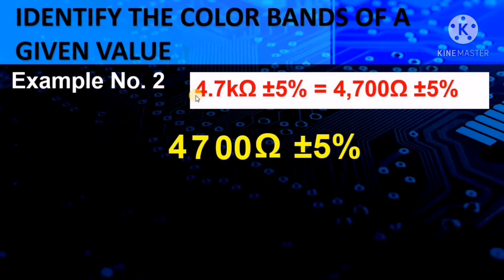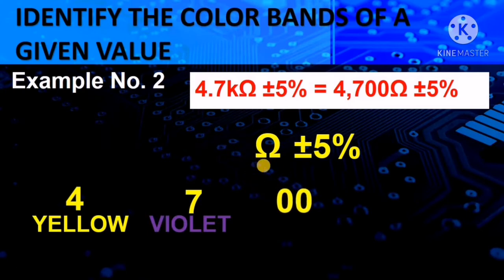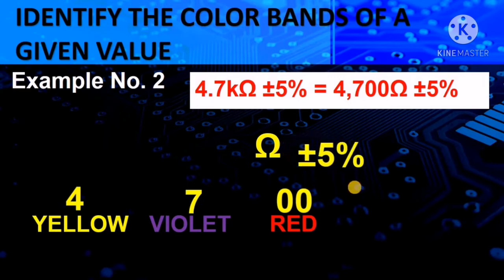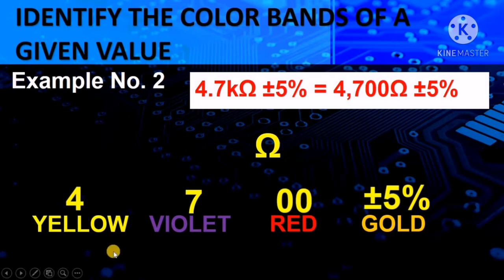Another example: what if the value you need to look for is 4.7 kilo ohms plus or minus 5%? We expand that to 4,700 ohms plus or minus 5%. The first two digits are 47: 4 for yellow, 7 for violet. There are two zeros, so the multiplier color is red — because red has a value of 100. Positive negative 5% is still gold. So for 4,700 ohms plus or minus 5%, the color combination is yellow, violet, red, and gold.